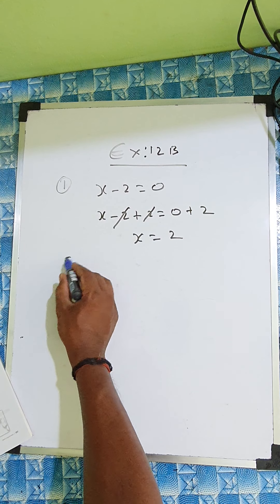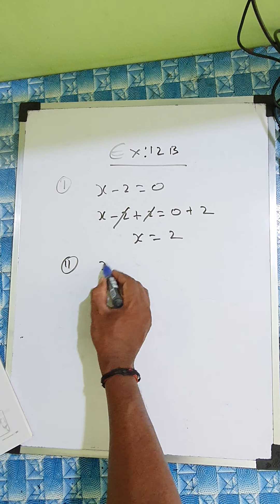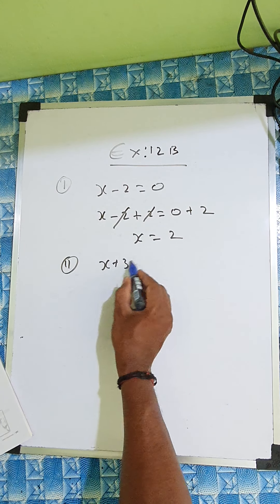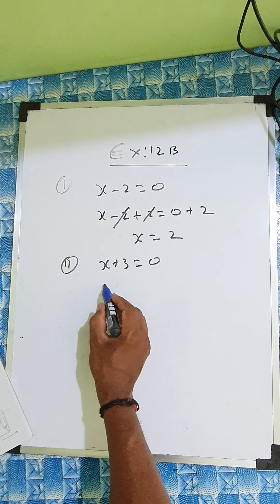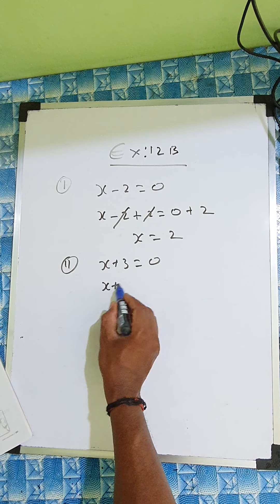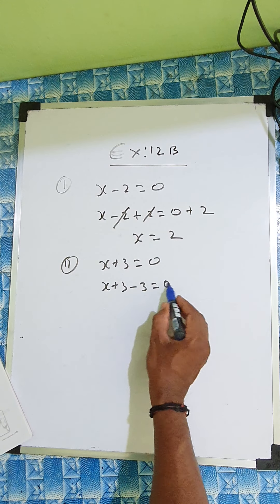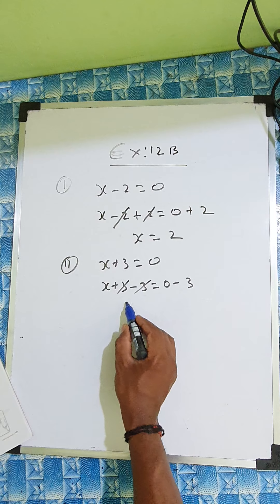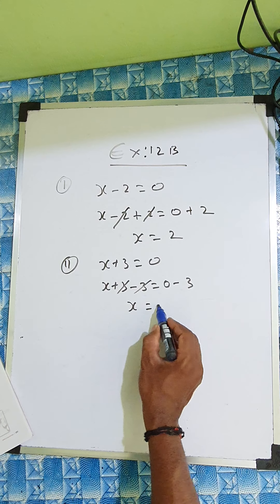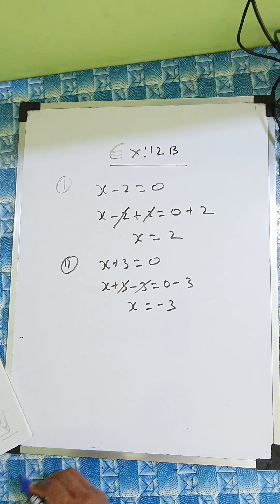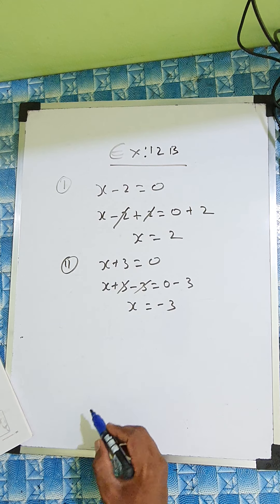See the second one: x plus 3 equal to 0. So we write here x plus 3, we'll put minus 3 and here also minus 3. So these two will cancel, x equal to minus 3.